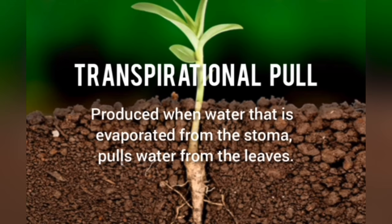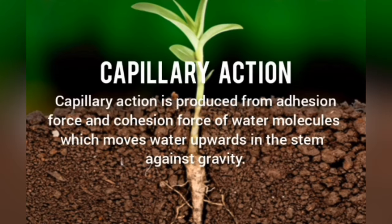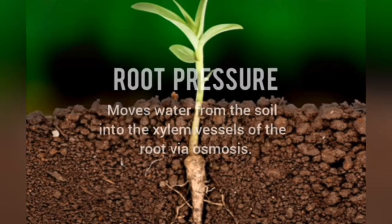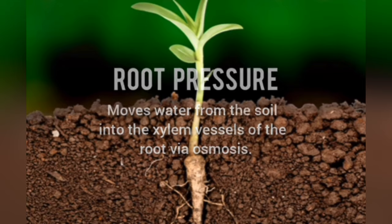Transpirational pull is produced when water evaporated from the stomata pulls water up from the leaves. Capillary action is produced from the adhesion force and cohesion force of water molecules, which move water upwards in the stem against gravity. There is also root pressure, also known as growth pressure.